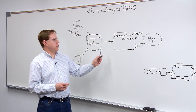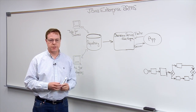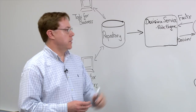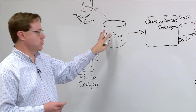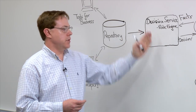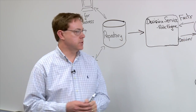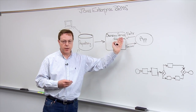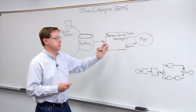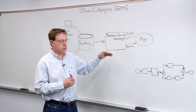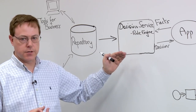Finally, BRMS contains a runtime service — a decision service. This service takes information from applications in the form of facts, evaluates those facts against rules extracted from the repository, and renders decisions based on those facts. For example, an application may present a mortgage application as a set of facts to a decision engine. The engine would reference a series of rules and make a determination about the validity of the claim.